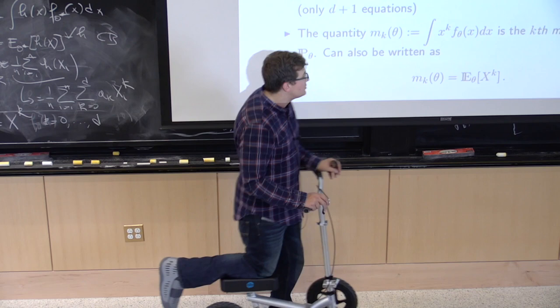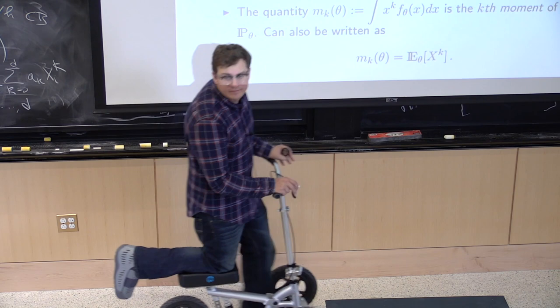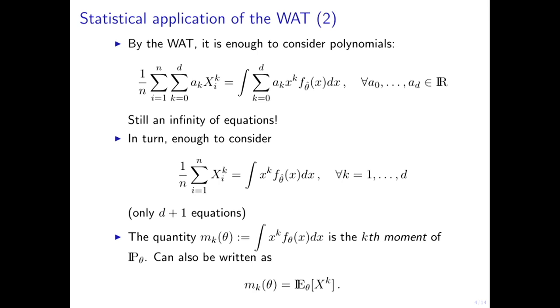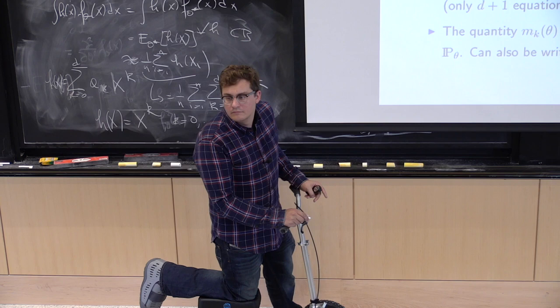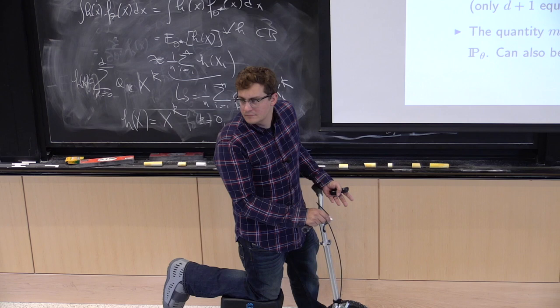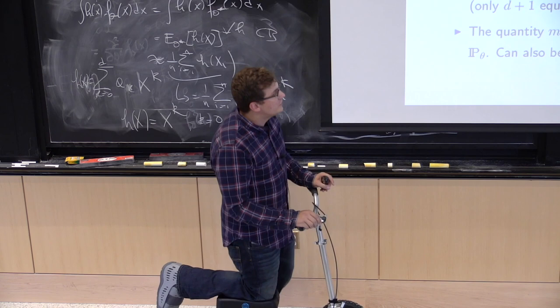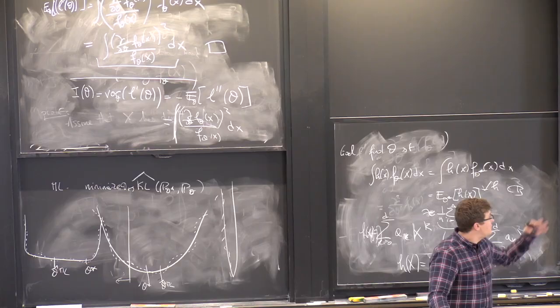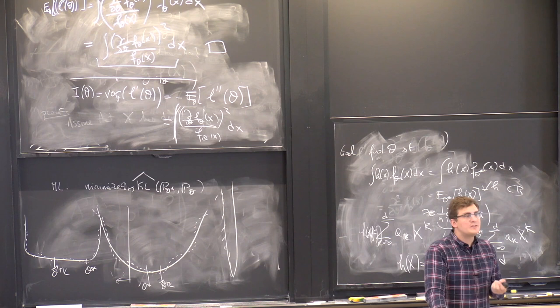The integral of f theta against x^k is called the k-th moment, or moment of order k, of p theta. The mean is the first moment. The variance is the second moment minus the first moment squared. The method of moments works by matching these moments between the model and the data.